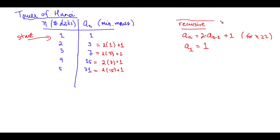So a sub one is equal to one. So this is the recursive sequence that describes the minimum number of moves necessary to solve the Tower of Hanoi with n number of disks.